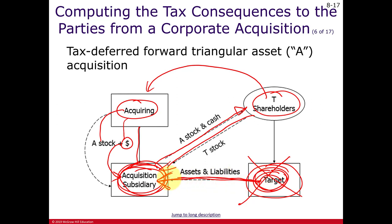All the assets and liabilities go over to the new subsidiary. Target goes out of existence and Shareholder T is now a shareholder of the acquiring corporation — continuity of interest is maintained. This is a tax-free transaction for the target corporation; all cost basis transfers to the new acquiring subsidiary. For Shareholder T, it could be taxable if they receive boot; otherwise the stock basis substitutes to the acquiring corporation's stock basis.